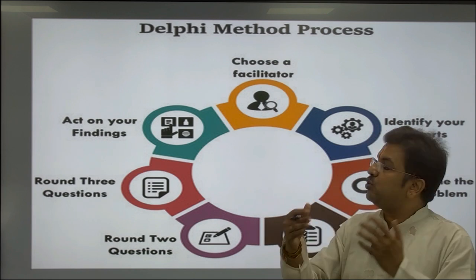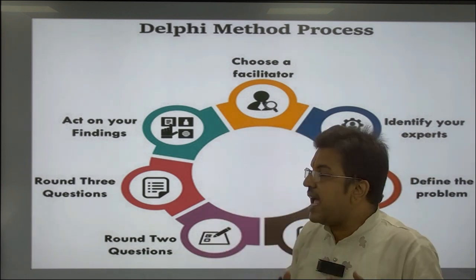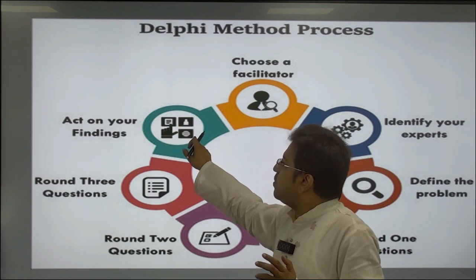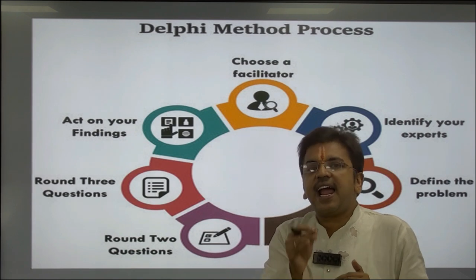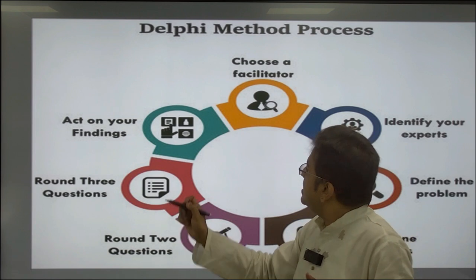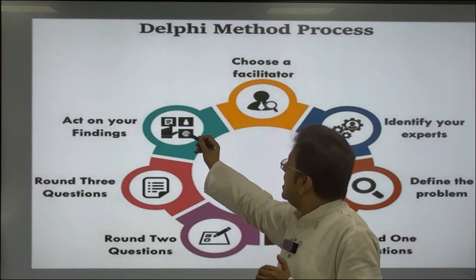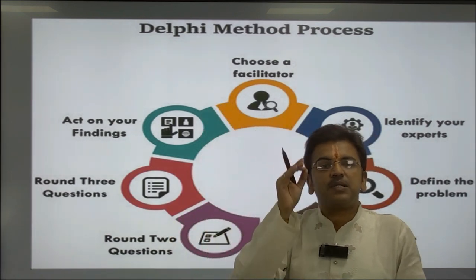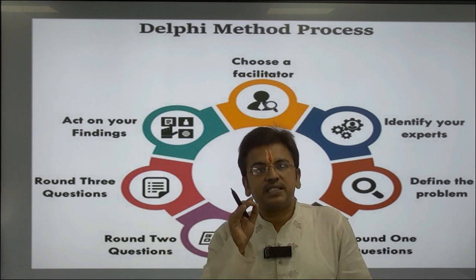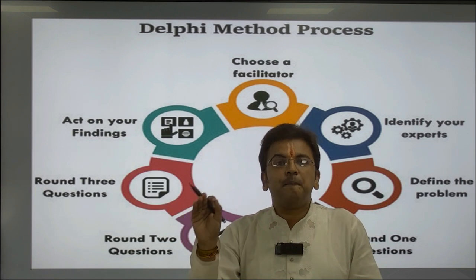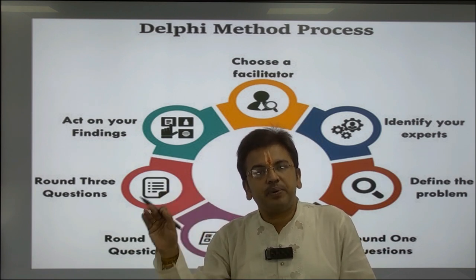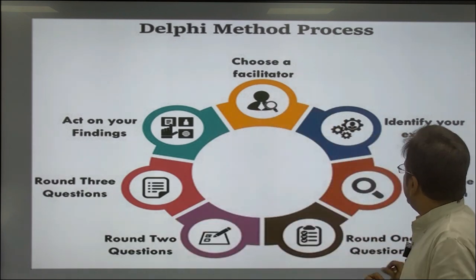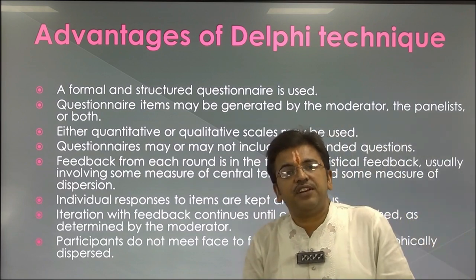This drafted questionnaire is sent to the expert panel; they answer it. In the final step, you collect the questionnaire, analyze the data, get the findings, and use those findings for your prediction unit. The whole Delphi process covers: selecting a facilitator, selecting experts, finding the problem, three rounds of interaction — first oral communication, second drafting the questionnaire, third making the questionnaire available to experts — and then analyzing findings.